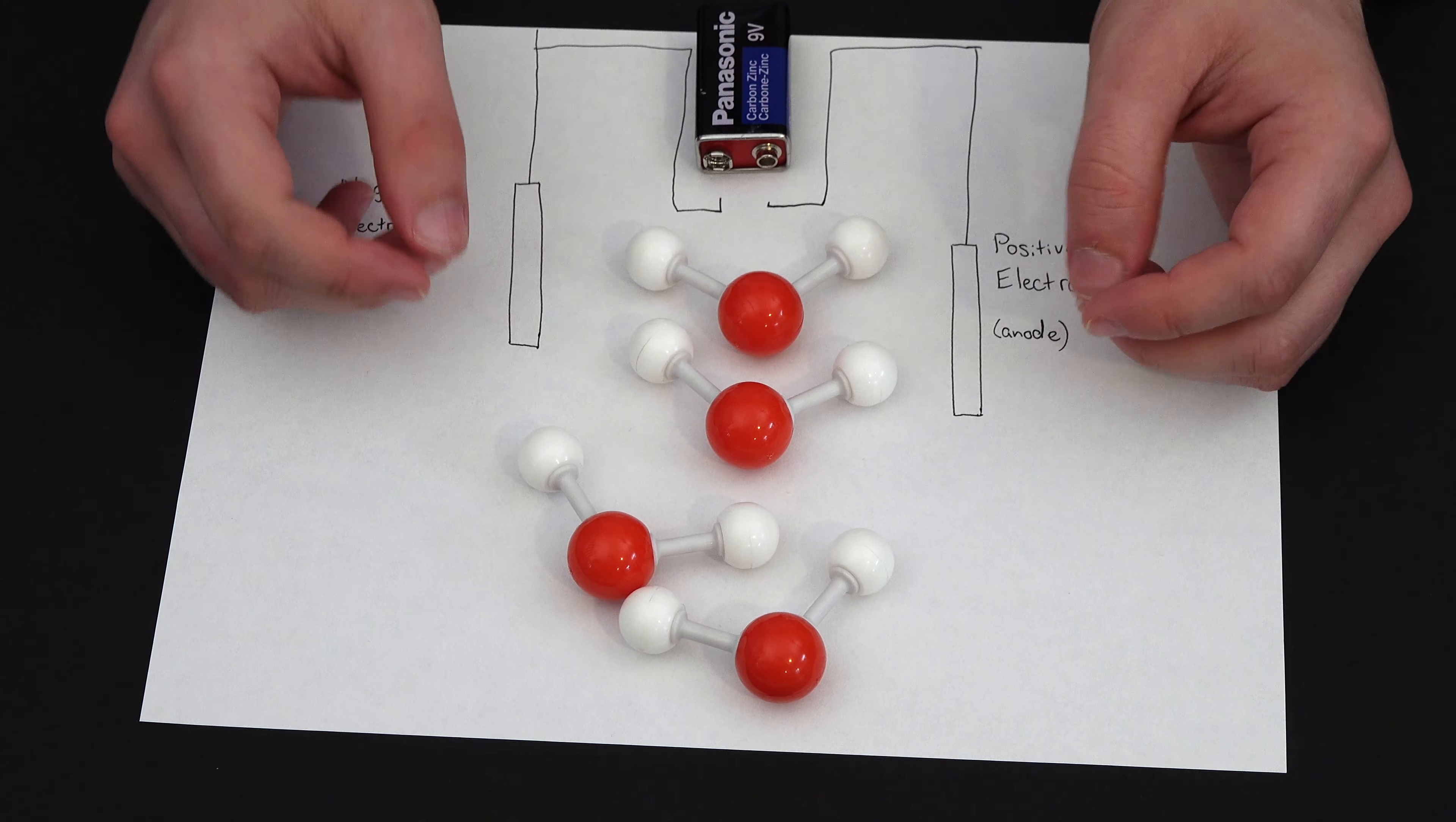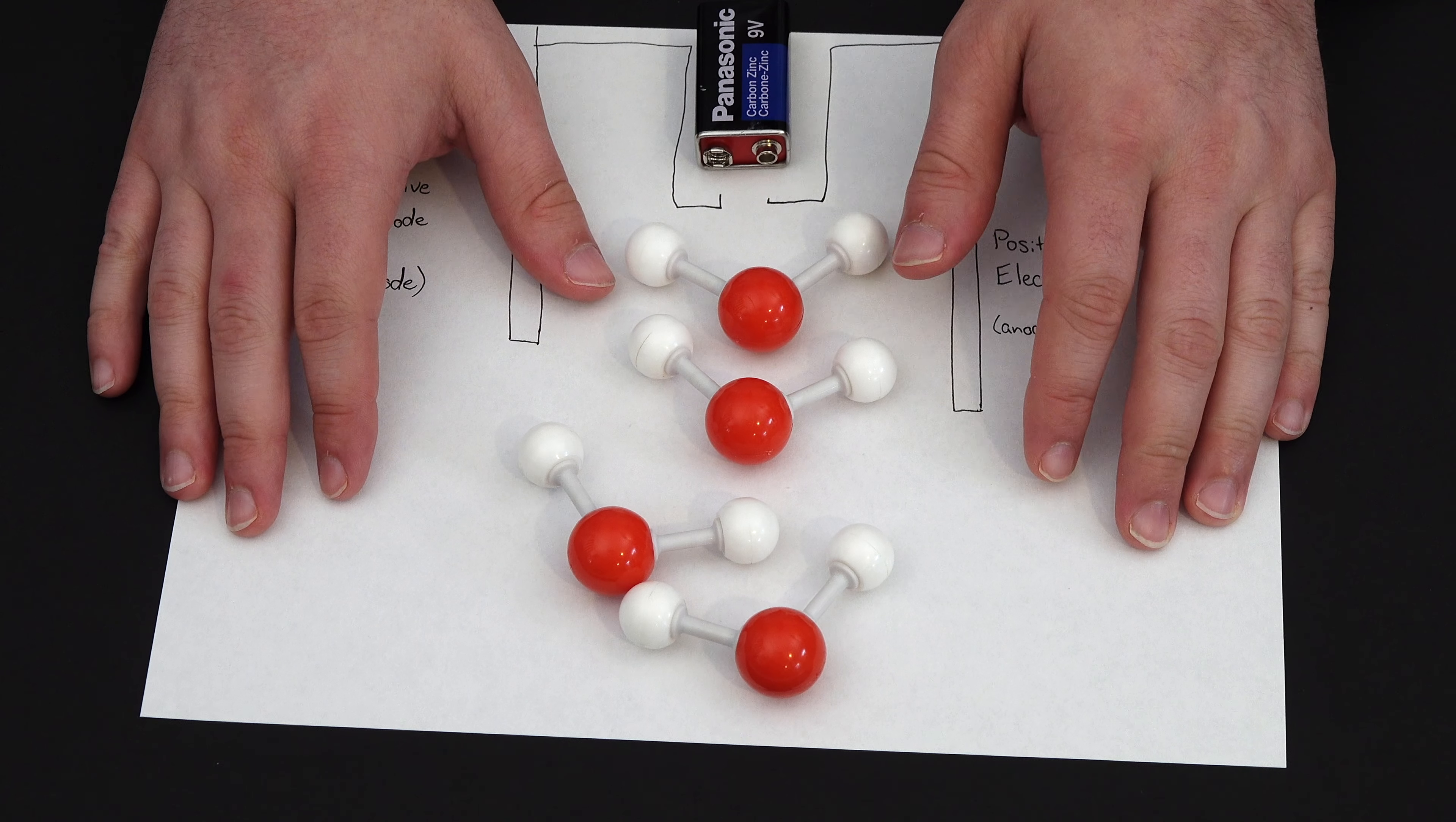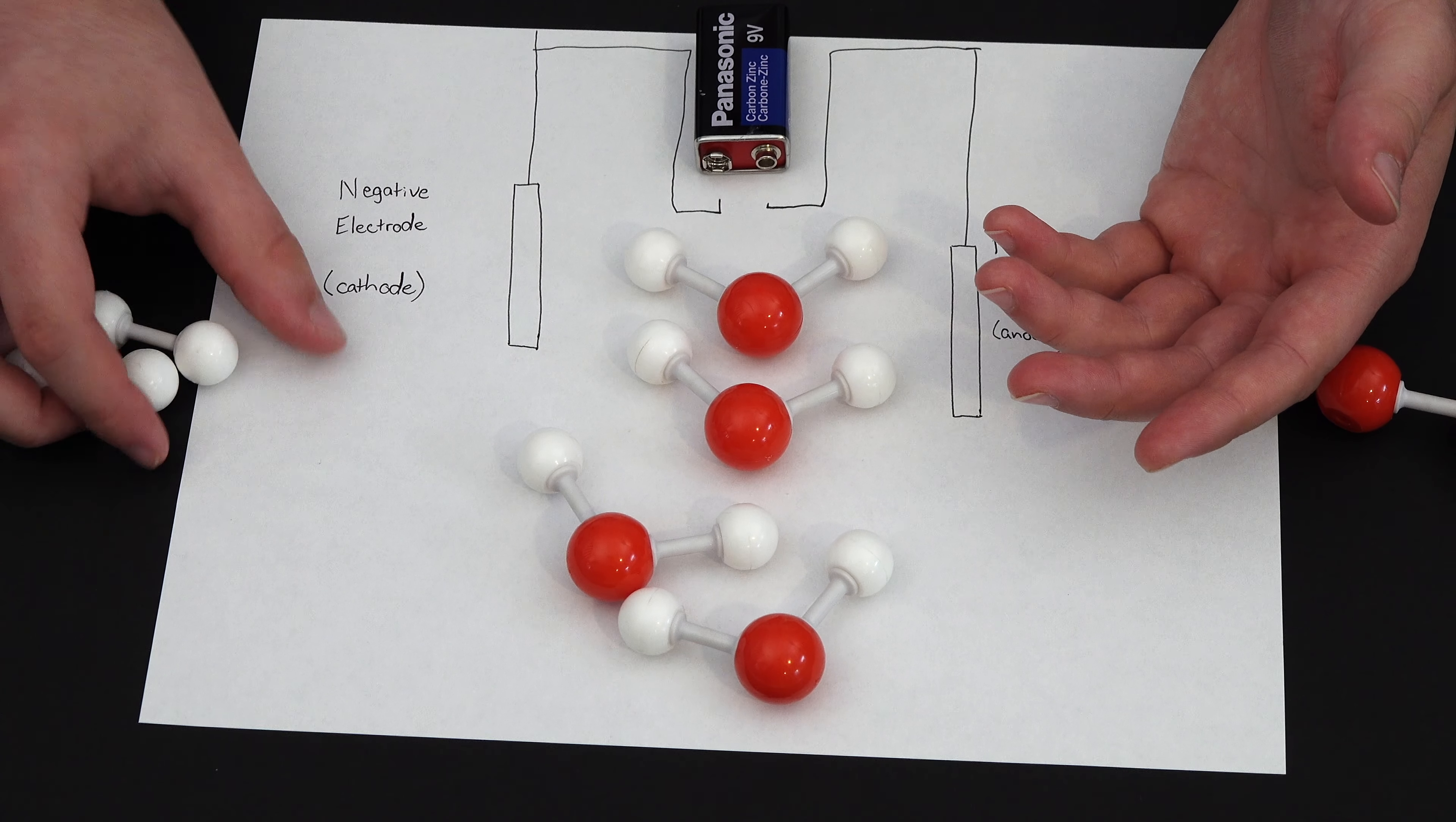And this now explains why this process is inherently inefficient. You essentially need to provide the energy to split six water molecules, but you only actually succeed in splitting two of them. So as a sort of baseline efficiency, this process can only ever be about 33% efficient.